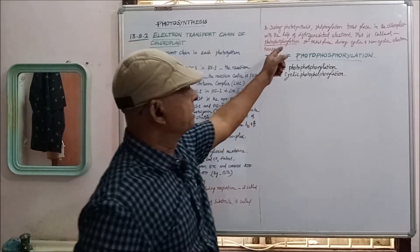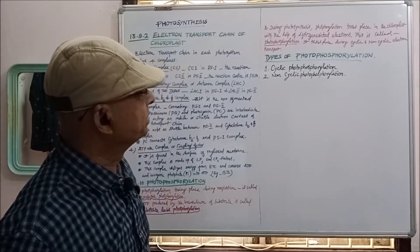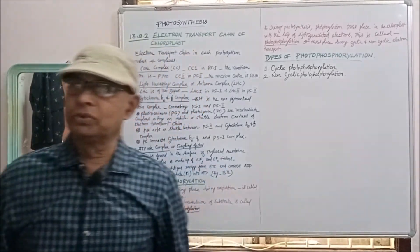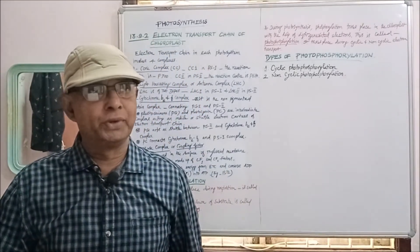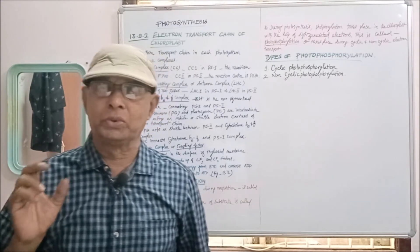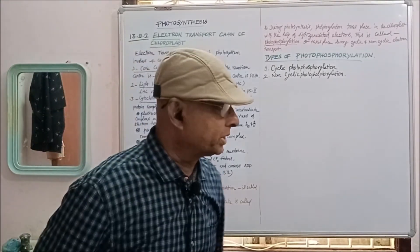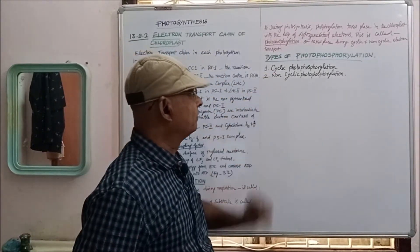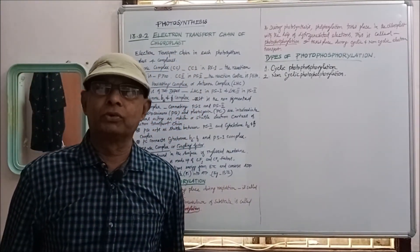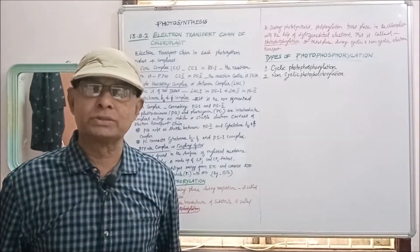During photosynthesis, phosphorylation takes place with the help of light-generated electrons — this is called photophosphorylation. So, photophosphorylation is when the synthesis of ATP takes place in the presence of light during photosynthesis. Photophosphorylation is of two types: cyclic photophosphorylation and non-cyclic photophosphorylation, which we will see in the next class in detail.